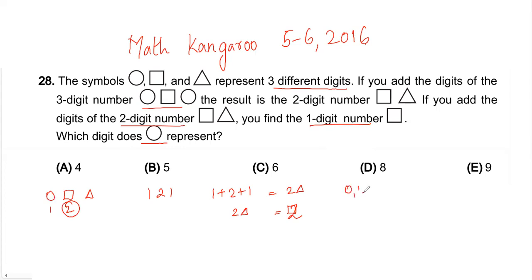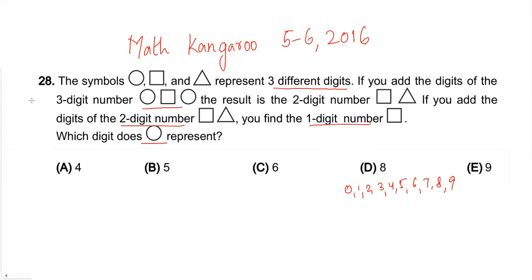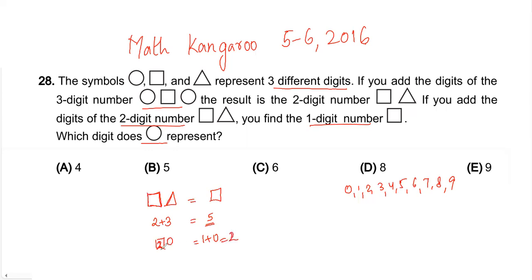We have 10 digits in math, so let's figure out which digit fits where. When you add the digits of the two-digit number and get the same square digit, that is only possible when the triangle is zero. For example, one plus zero gives one, two plus zero gives two, three plus zero gives three. So we are sure the triangle is zero.